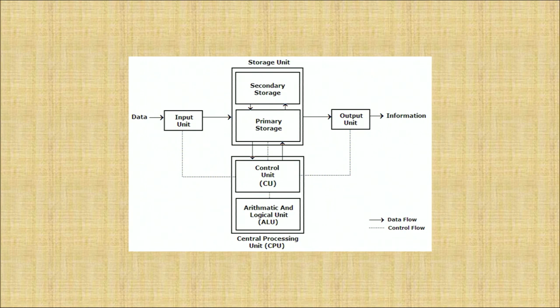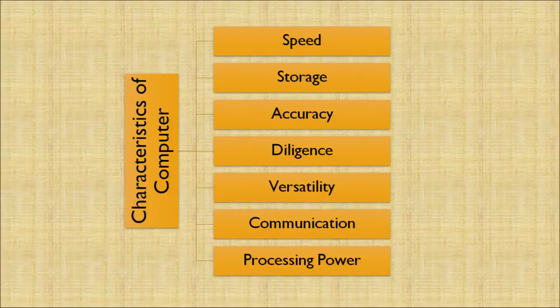Information is always a meaningful representation of the raw data that we have input into the computer system. There are seven characteristics of a computer: number one, speed; second, storage; third, accuracy; fourth, diligence; fifth, versatility; sixth, communication; and seventh, processing power.